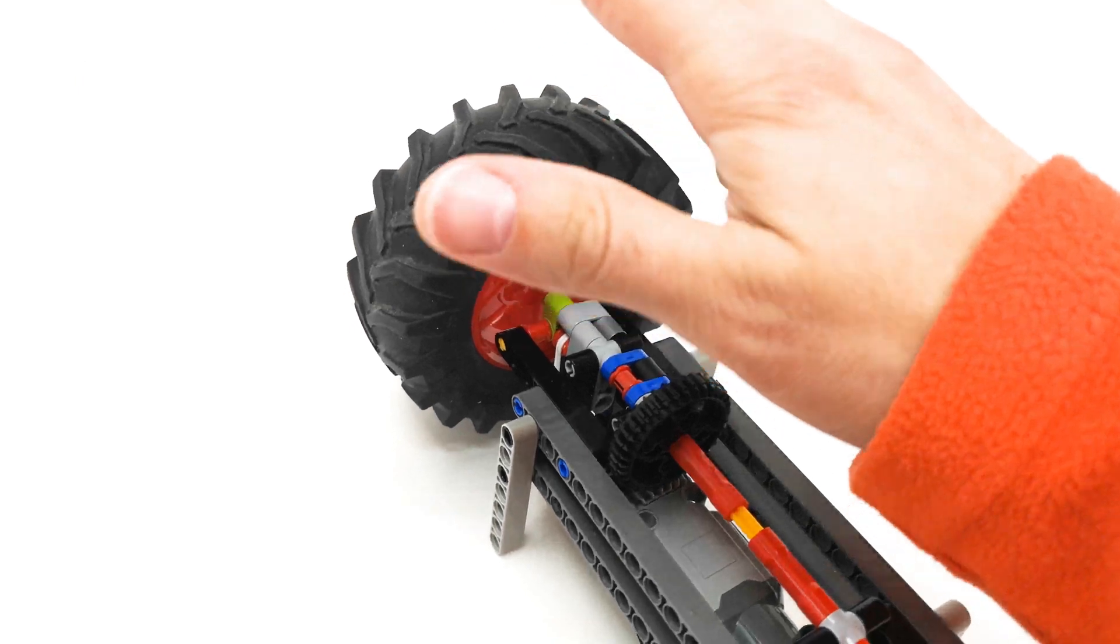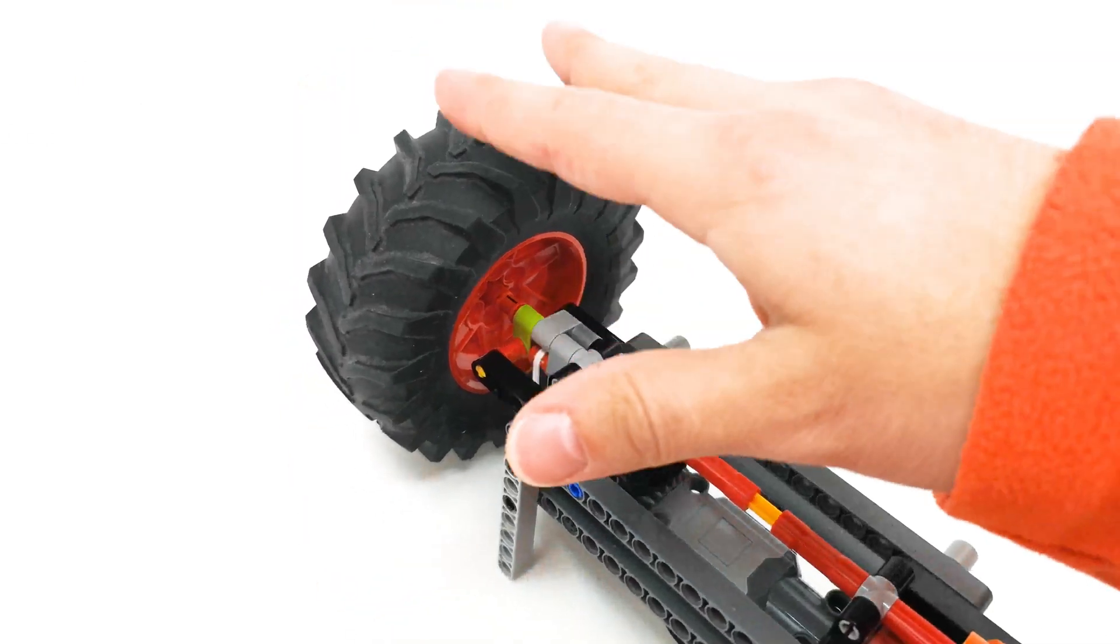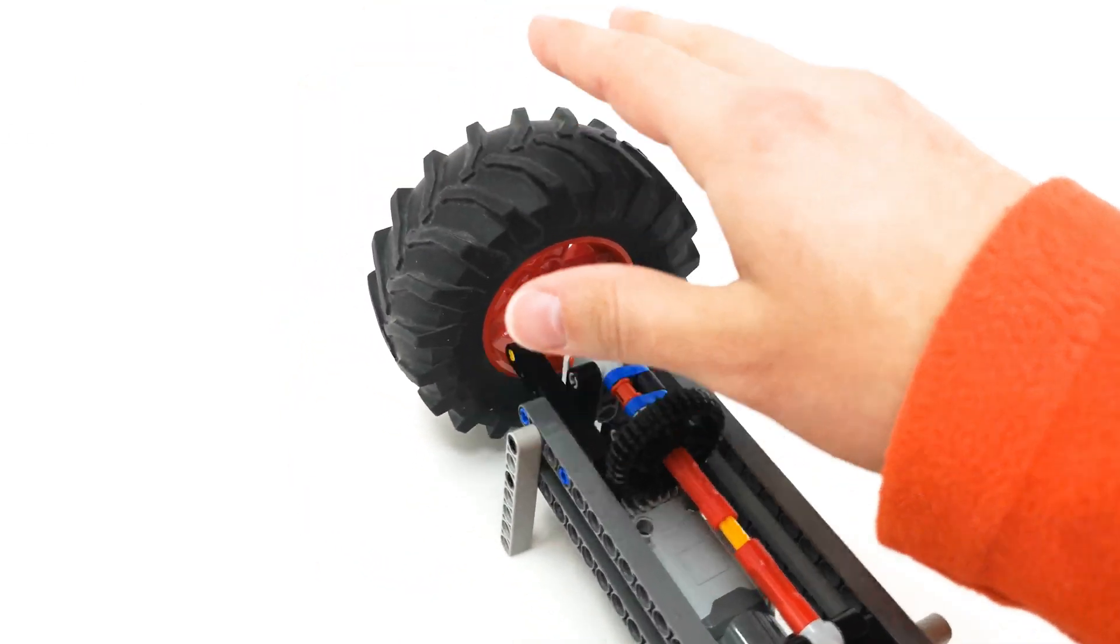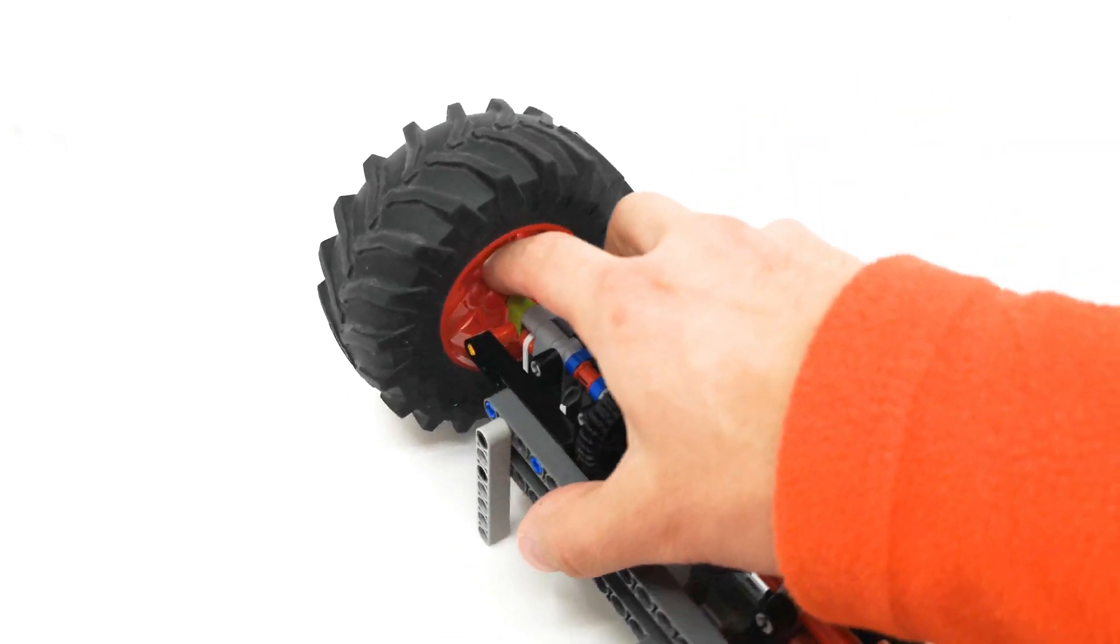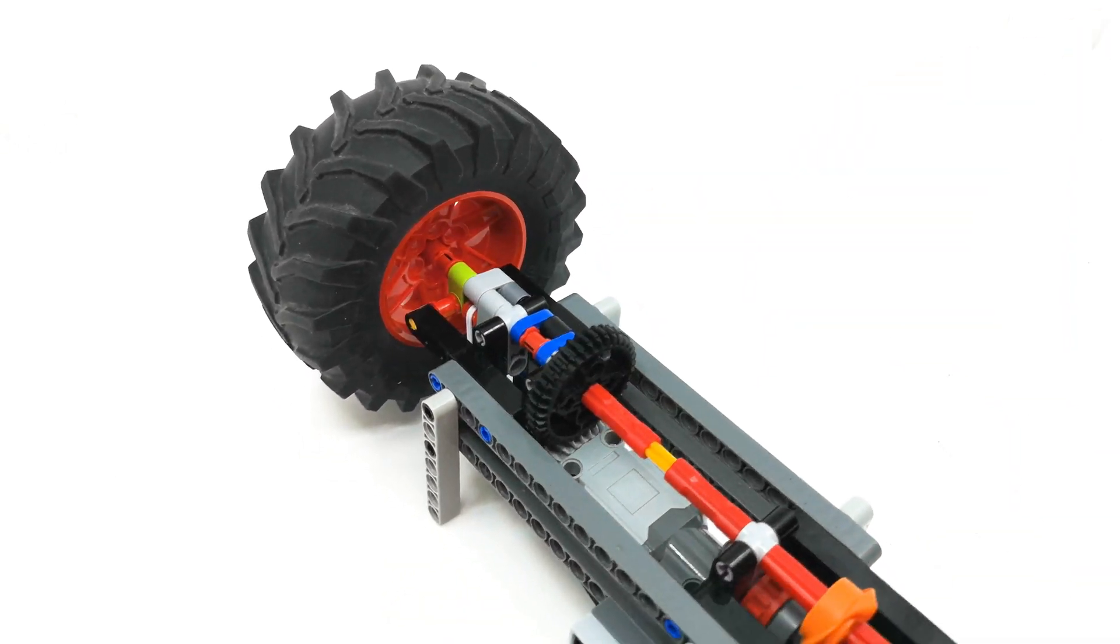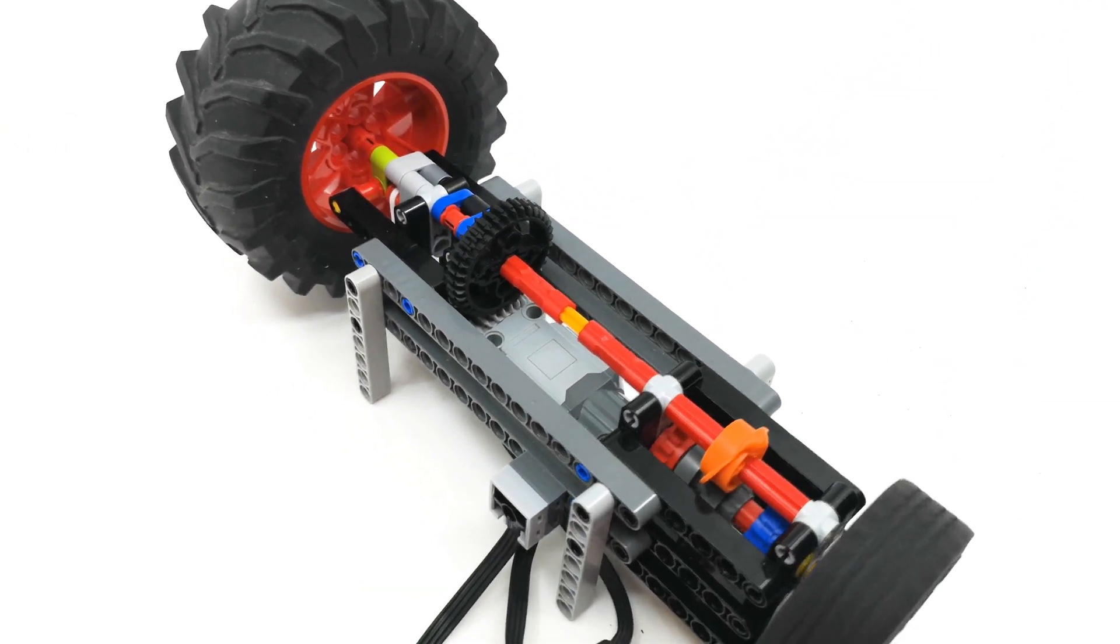Now, the reason behind this wheel here is that it gives the gearbox some inertia to switch gears.